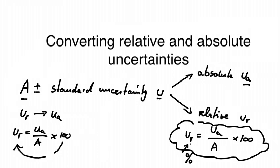So what we get is U_R over 100 times A, and this gives us our absolute uncertainty. So we can easily convert the different uncertainties, relative and absolute uncertainties, into each other.